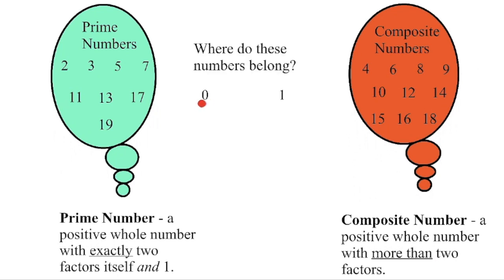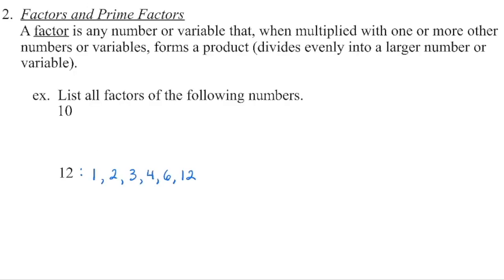Now what about 0 and 1? Where do we put those numbers? Well, as it turns out, 0 is neither prime nor composite, and 1 is also neither prime nor composite. To understand why, we're going to first delve a little bit deeper into what exactly is a factor.